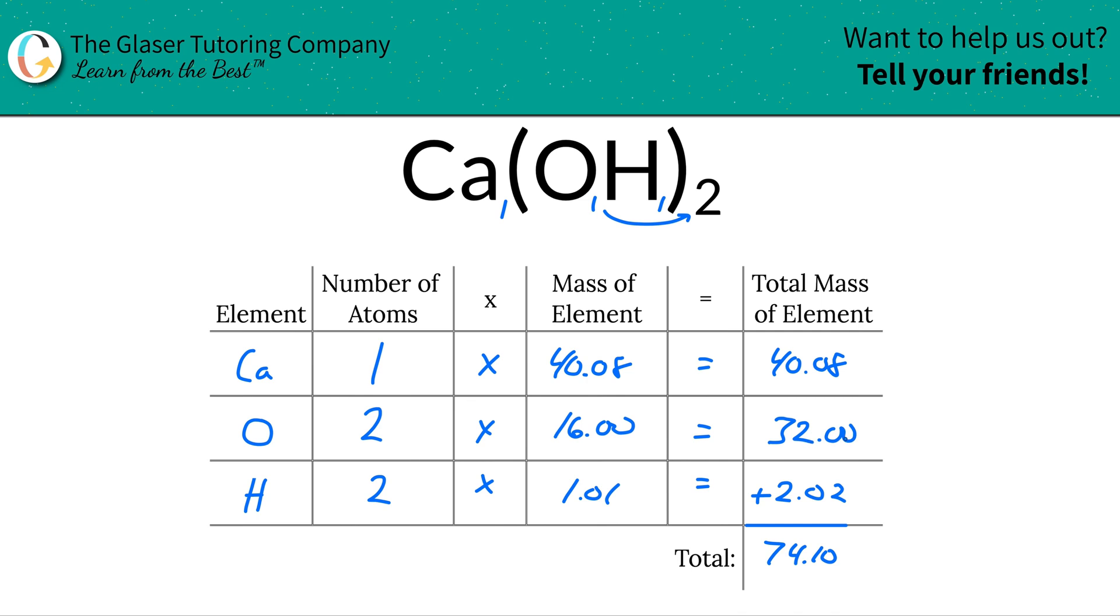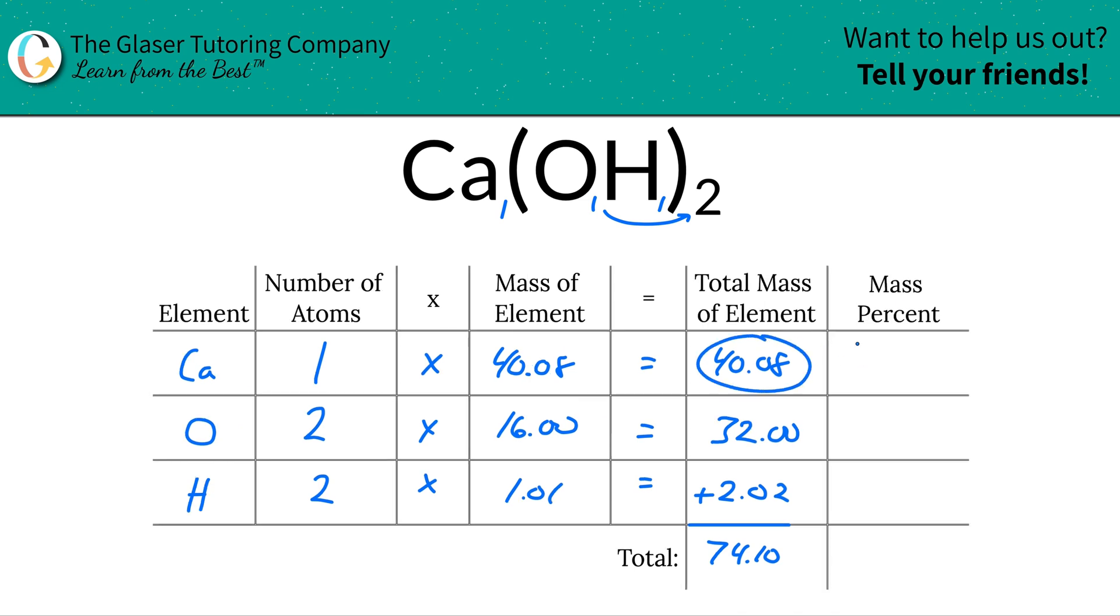I'm going to add another column to the table. So to find the mass percent of calcium, just simply take the total amount of calcium here, 40.08, and then you're going to divide it by the total mass of the compound. That's why we needed to do that first. So we have 74.10, and then simply multiply it by 100. If you notice, this is a very simple percent calculation, part over whole times 100. And when we do the math there, it's going to work out to be about 54.09, considering rounding. So that's the percent of calcium in calcium hydroxide.